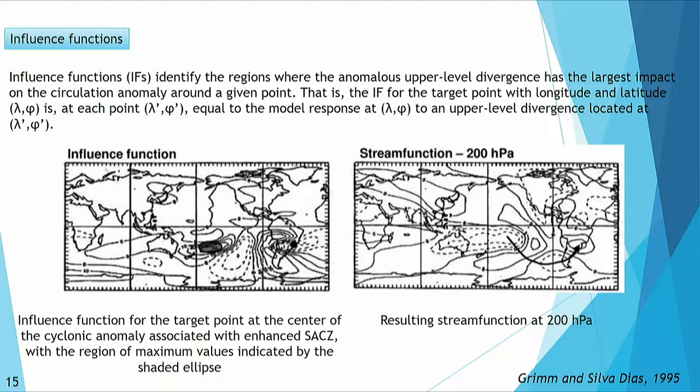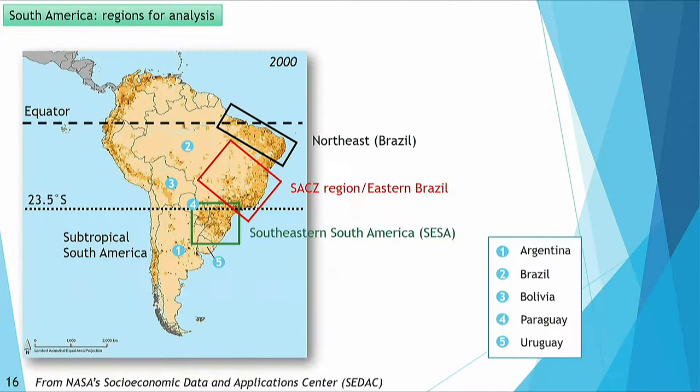There is also a 1995 study that Nicolas has given an updated version of, using influence functions to detect where the divergence signal in the winds may be influencing a certain region. Using a barotropic model and a target point in the South Atlantic Convergence Zone region, they found that the region exciting those wave trains might be coming from the Central Pacific region or the SPCZ region, slightly displaced to the east.